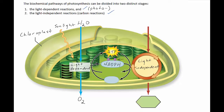The light-independent reactions use ATP and the high-energy electrons in NADPH to convert carbon dioxide into glucose. So the light-independent reactions are actually the synthesis part of photosynthesis, because you're synthesizing glucose from carbon dioxide. The ATP and NADPH that fuels the light-independent reactions are produced by the light-dependent reactions. Carbon dioxide from the atmosphere diffuses into mesophyll cells and across the membrane of the chloroplast into the stroma where the carbon reactions occur. The light-dependent reactions occur in the thylakoid membrane and the light-independent reactions occur in the stroma.